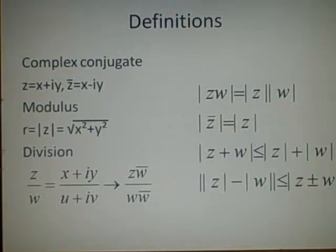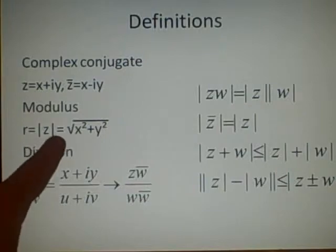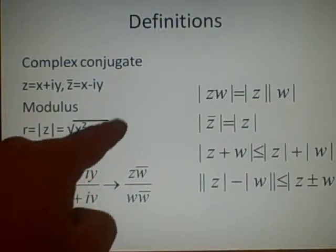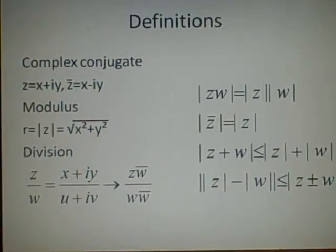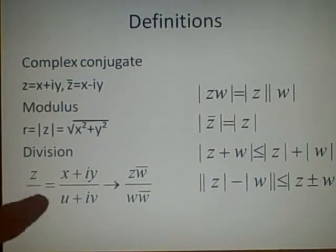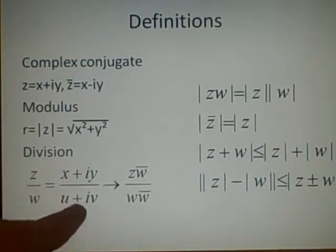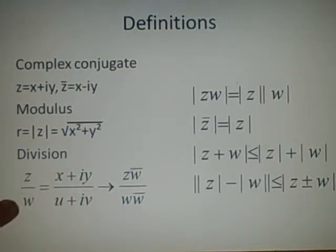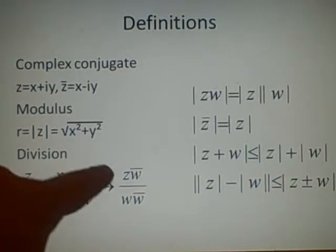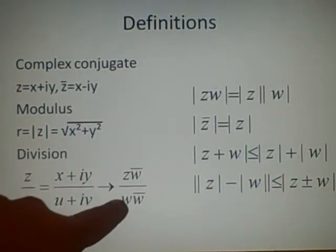The modulus is a single number — it's just the square root of all the components squared, so the real part squared plus the imaginary part squared. For division, you have to use a neat little trick. What we have is z over w, so we've got x plus iy over u plus iv, and all you do is multiply both top and bottom by the conjugate of the bottom — so z w-bar over w w-bar.